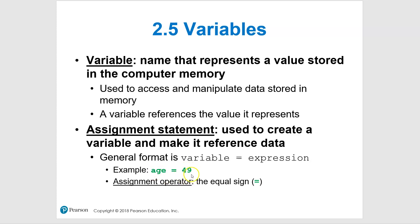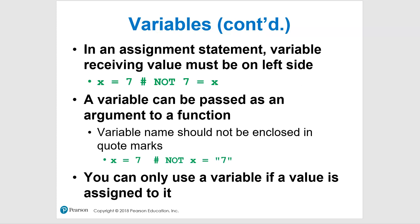So wherever we refer to the variable 'age' in our program after that statement, the computer will see the number 49. The general form is: variable equals expression. You put the variable name on the left and whatever you're storing on the right. Importantly, the variable receiving the value must always be on the left-hand side — you must say x equals 7, not 7 equals x, which will give you an error.